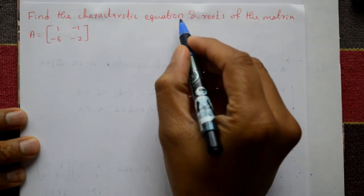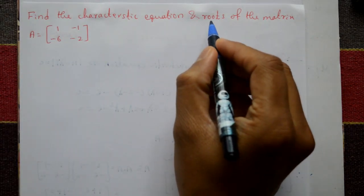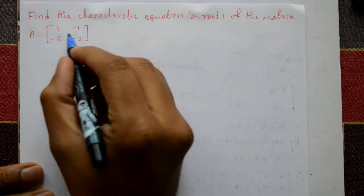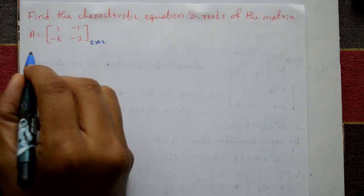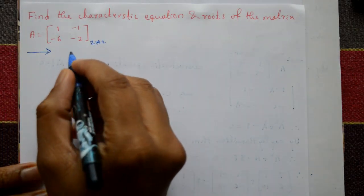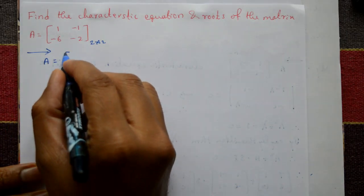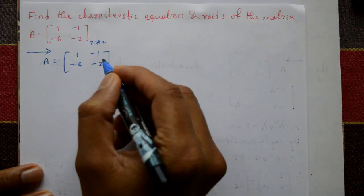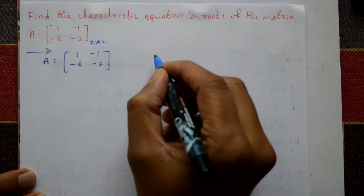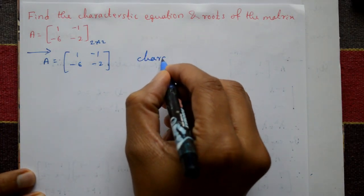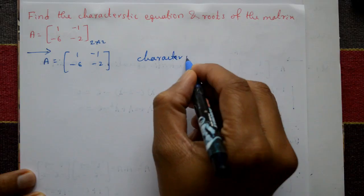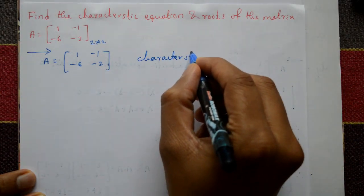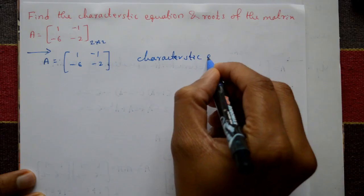Find the characteristic equation and roots of a given 2×2 matrix. The solution: matrix A is given as [[1, -1], [-6, -2]]. First, we find the characteristic equation, then the roots of the matrix.